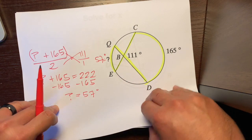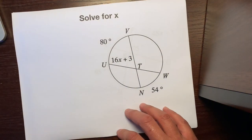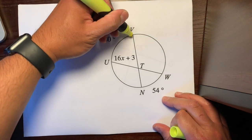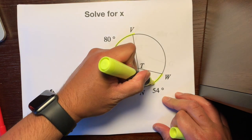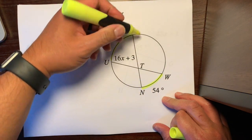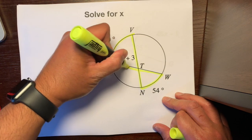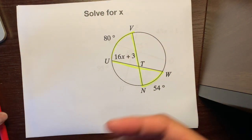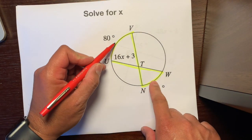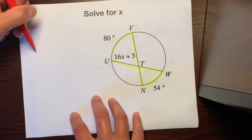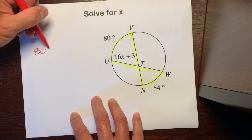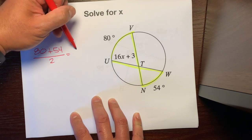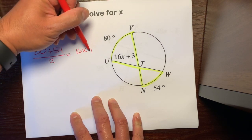Alright, example number 3. This time we have to solve for X. They give us an arc, they give us the opposite arc, and the two chords that make up the angles that are eating or intercepting those two arcs. Same steps — we're going to find the average of these two arcs. So: 80 plus 54 divided by 2 is equal to 16x plus 3.